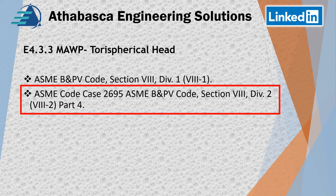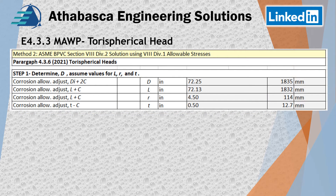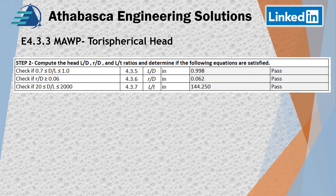We start off with the traditional setup — taking the adjustments for the corrosion allowances. Then in step two we take the ratios and do some checks. We have to make sure we're following the required ratios per 4.3.5. L_D over L has to be between the specified values — pass. R over D has to be greater than the limit — pass. If you're doing the code case calculation, we'll do a future presentation where we take a full Division 2 calculation and look at it that way.